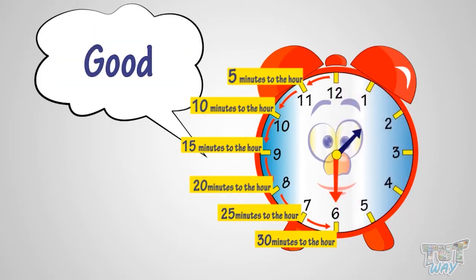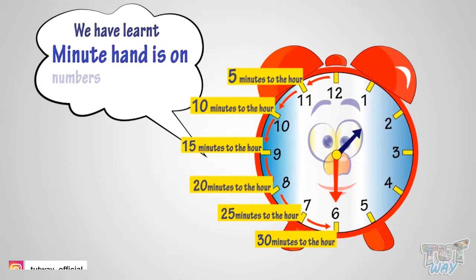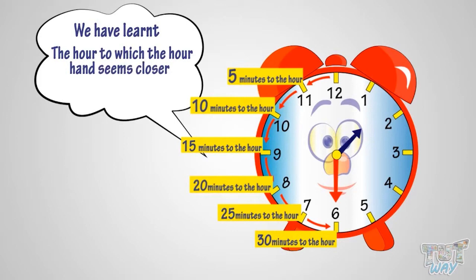So what have we learned? We have learned when the minute hand is on numbers 7, 8, 9, 10, or 11, we tell time by minutes to the hour. And minutes to which hour? It is the hour to which the hour hand seems closer.